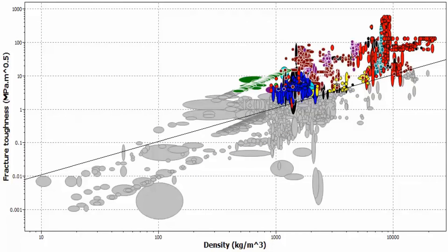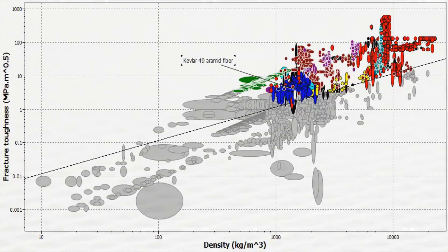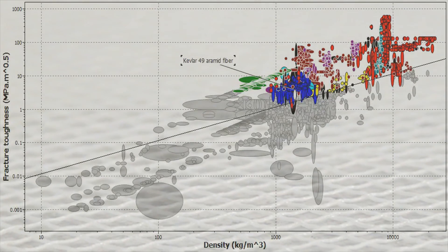We then apply the line to the graph and make our selection. As you can see here, polyaramids, one of which is Kevlar, are the most commonly used bulletproof materials.